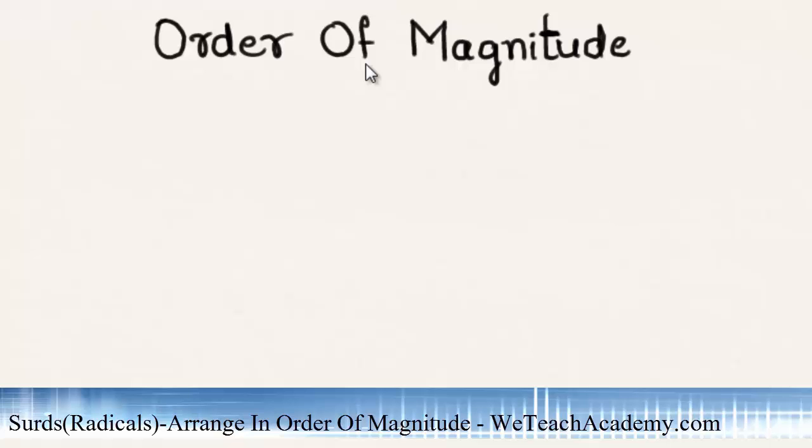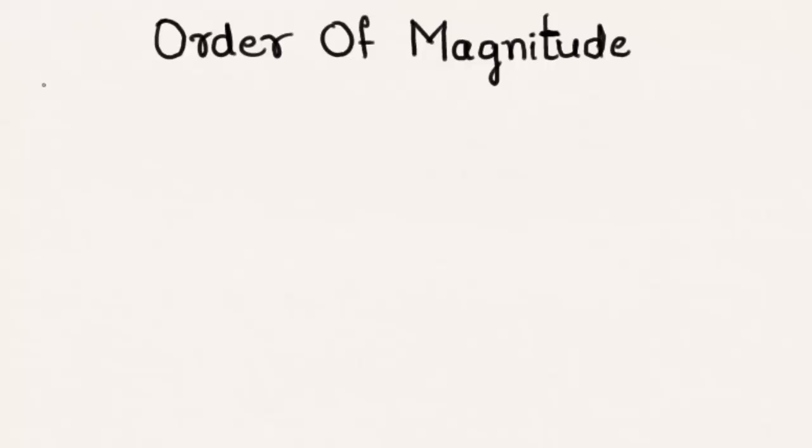Hey guys, welcome to WeTeachAcademy.com. In this presentation we are going to discuss order of magnitude. Let me explain this concept with an example. The given surds are fourth root of 10, cube root of 6, and square root of 3, and we have to arrange the following surds in ascending and descending order of magnitude.